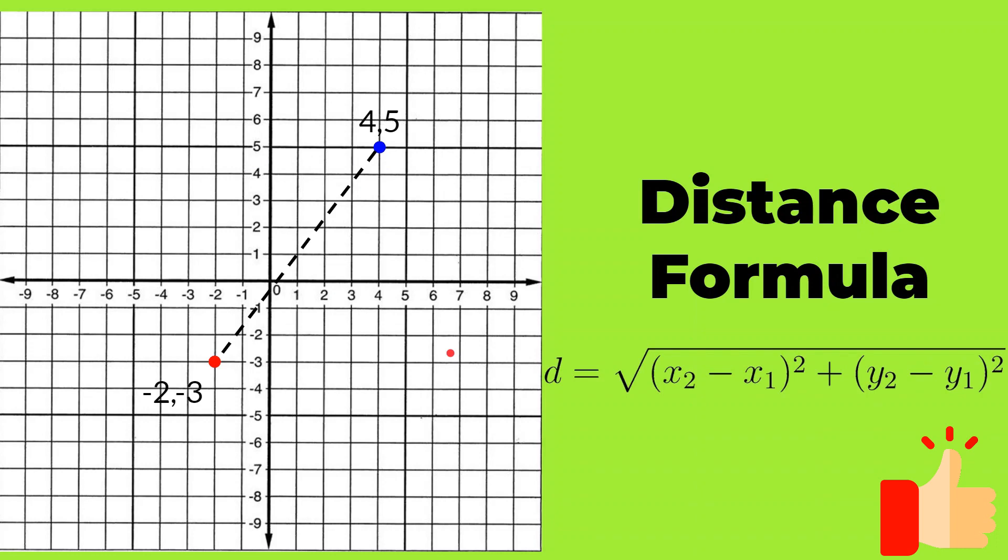That is, d is equal to the square root of x2 minus x1 whole square plus y2 minus y1 whole square. Now, let's say that this red point is point 1 while the blue point is point 2. So x2 is the x coordinate of point 2, x1 is the x coordinate of point 1. Similarly, y2 is y coordinate of point 2 and y1 is the y coordinate of point 1. Now using this formula we are going to find the distance which is represented by the dotted line between these two points.